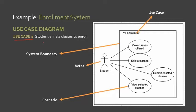For use case number one, student enlists classes to enroll. If you can see here, this is our use case. This is the pre-enlistment. We have the system boundary that's inside our rectangle. We also have the actor, of course, the student. We have the scenarios here. We have four scenarios: view classes offered, select classes offered, select classes, submit enlisted classes, and view selected classes. The scenarios are our functions or our features of our system.